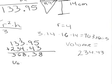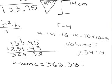And then 6 and 3. So the volume of the whole thing, which would be the conic sphere, is 368.38 centimeters cubed, and that's our whole volume.